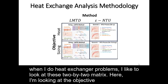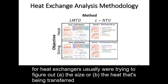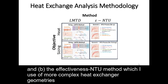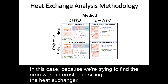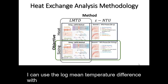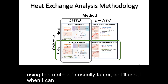When I do heat exchanger problems I like to look at this 2x2 matrix. Here I'm looking at the objective — for heat exchangers usually we're trying to figure out the size or the heat being transferred — and I look at the method: the log mean temperature difference, which I can use with counter flow and parallel flow heat exchangers, and the effectiveness NTU method, which I use with more complex heat exchanger geometries. In this case because we're trying to find the area and because I have a counter flow and a parallel flow heat exchanger, I can use the log mean temperature difference method. Using this method is usually faster so I'll use it when I can.